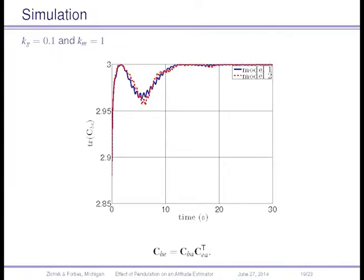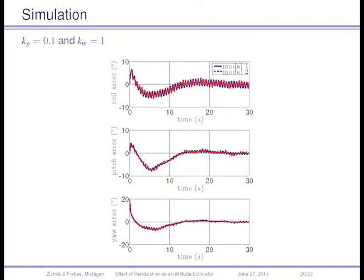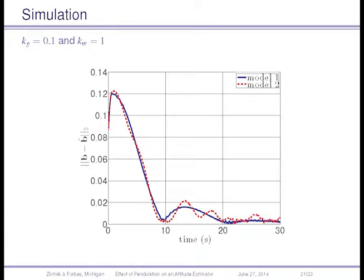To mitigate the effects of linear acceleration in the payload due to pendulation, we reduce the gain associated with the accelerometer, thereby reducing our confidence in that measurement. As you can see, the red line — with acceleration due to pendulation included — is now much closer to the model without pendulation. The yaw, pitch, and roll errors and the bias error are all much closer to the better model as well.